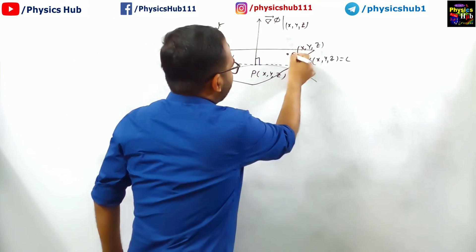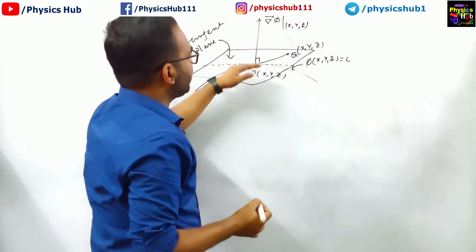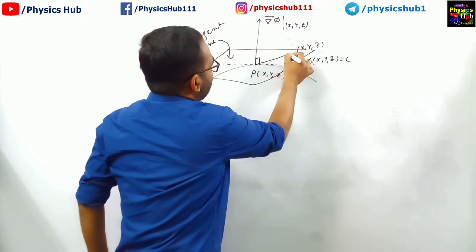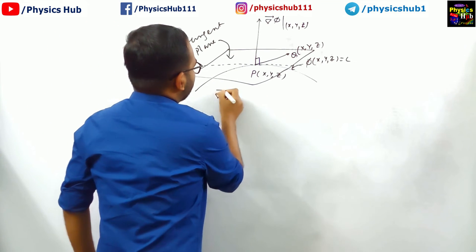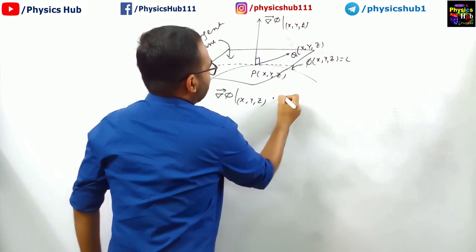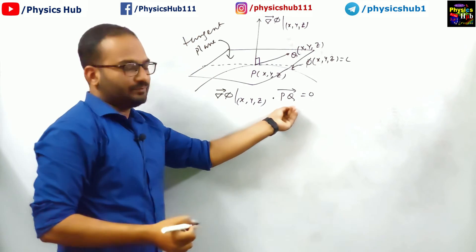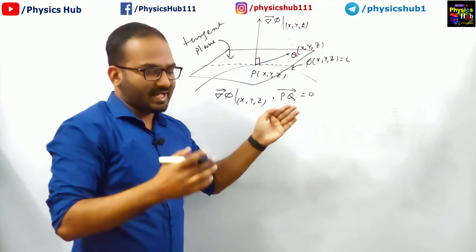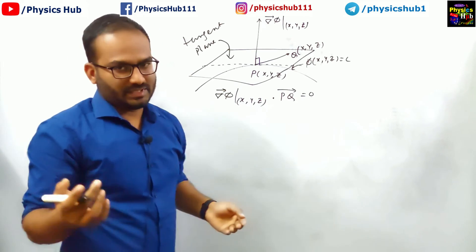Now, this point Q is lying on the plane and this plane is making an angle 90 degrees with the direction of grad phi. So the angle between PQ and this direction will also be 90 degrees. Mathematically speaking, we can write grad phi evaluated at x, y, z dot PQ equals 0, because the angle between these two vectors is 90 degrees and the dot product between two vectors whose angle is 90 degrees equals 0 because cos 90 is 0.